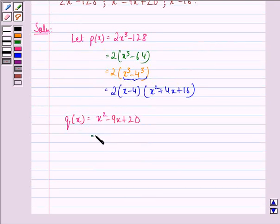We factorize this now. This is equal to x squared minus 5x minus 4x plus 20, which equals x times (x minus 5) minus 4 times (x minus 5).